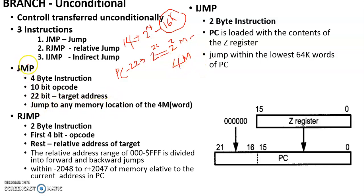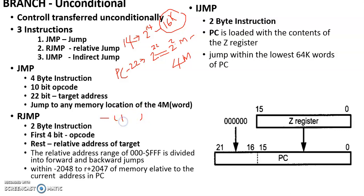RJMP — relative jump — transfers control relative to the present location. This jump is executed relative to the present address of the program counter.